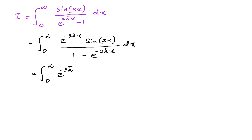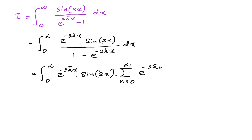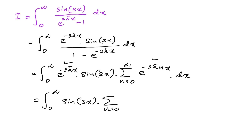We have e^(−2πx) times sine(sx), and 1 over (1 − e^(−2πx)) can be represented as an infinite series: the sum from n=0 to infinity of e^(−2πnx). So we have the integral from 0 to infinity of sine(sx) times the sum from n=0 to infinity of e^(−2πx · (n+1)) dx.